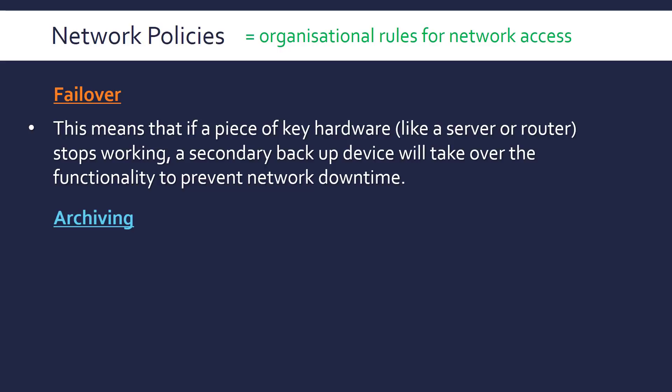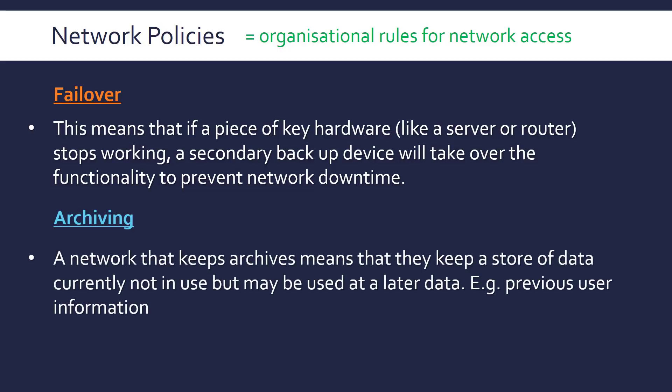Another network policy, which is less to do with security but is still taught, is archiving. This is keeping a store of data that's not currently being used, such as previous employee information. You might even use this as an example of a poor network policy — if this is sensitive information, it's not a good thing to keep. Or if you do keep it, you've got to encrypt it. So this might be an example of a vulnerability, whereas the rest are usually good policies to have.